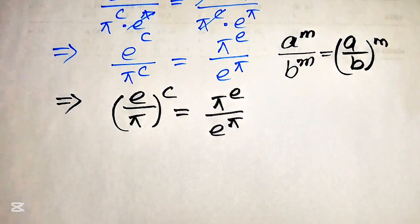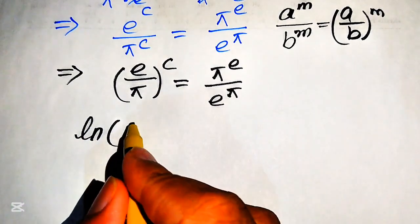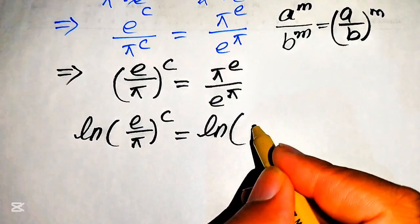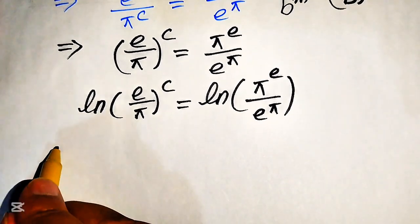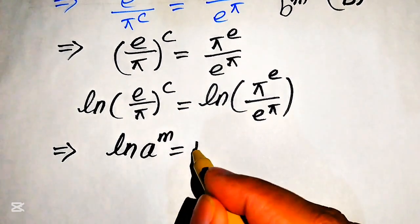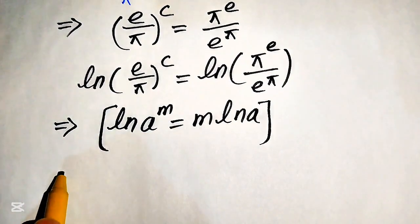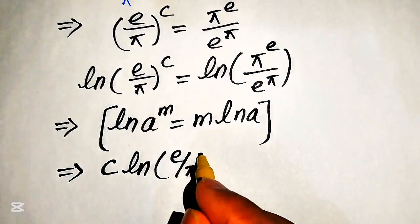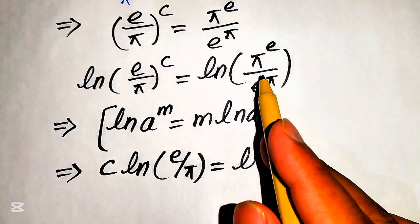Now our variable terms are on the left and constant terms on the right. We apply the natural log to both sides, giving: log of (e over pi) to the power of c equals log of pi to the power of e divided by e to the power of pi. Applying the log power rule — log of a to the power of m equals m times log a — we move c to the front: c times log(e over pi).